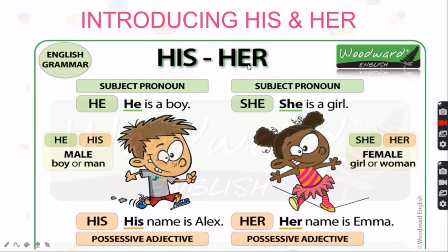'Her' comes from the subject pronoun 'she'. She is a girl. 'She' and 'her' is for female — a girl or a woman. For example, her name is Emma — 'her' means the name belongs to her. So we use 'her': her name is Emma.